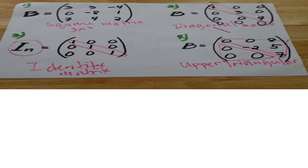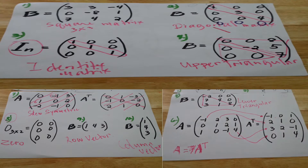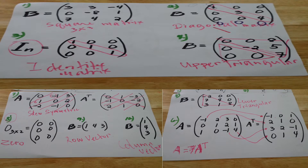In our last session, we compared the different kinds of matrices. We learned about the 10 kinds of matrices. We also learned that a square matrix is a matrix whose number of rows is equal to the number of columns, and that a matrix can be a diagonal matrix if each of its diagonal elements is zero. We also pointed out that an identity matrix has diagonal elements equal to 1. If you missed lesson number 8, the link is given in the description below.